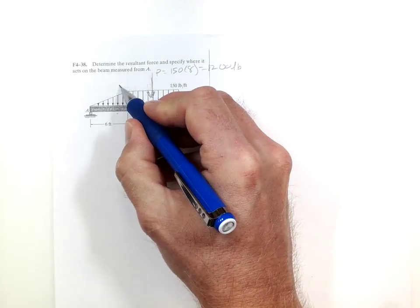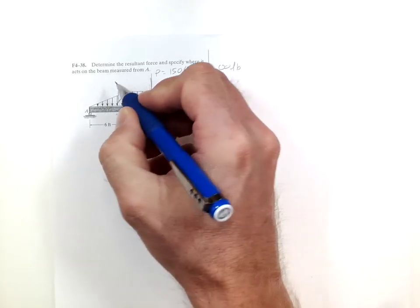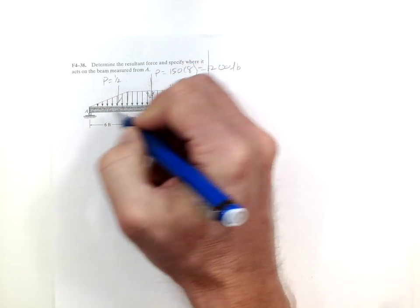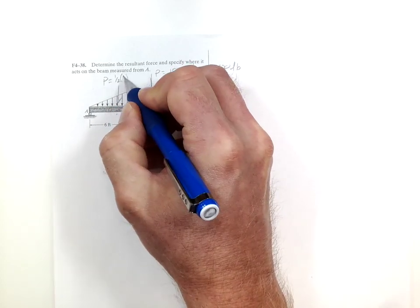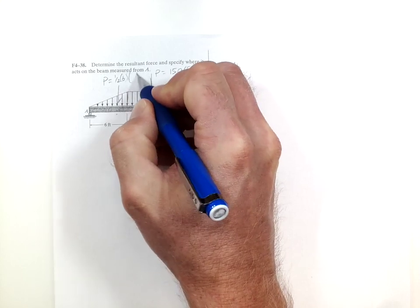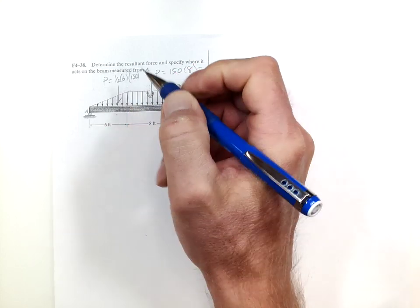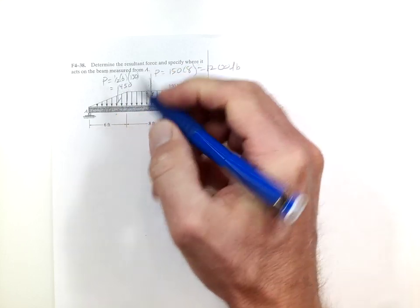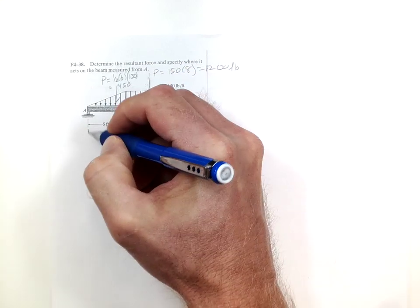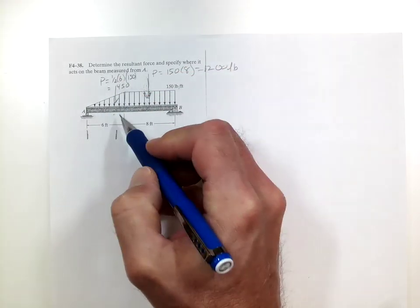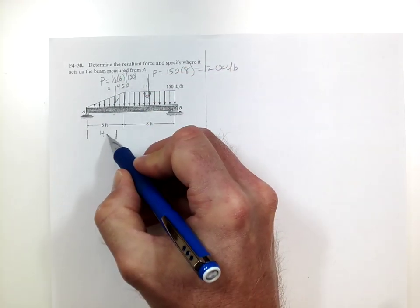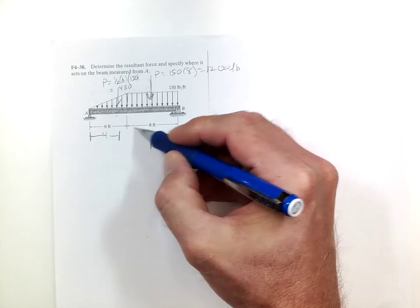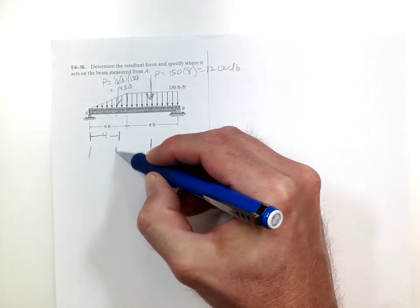The second one is on the triangle and that load will be one half the base, six, times the height, 150, and so that's equal to 450, and that is going to act at two-thirds the way from A. So two-thirds of six is four, and this one acts at half, that's four plus six is ten.